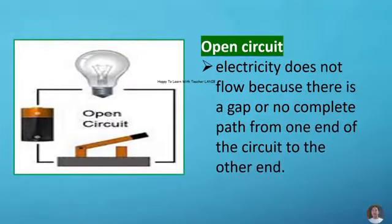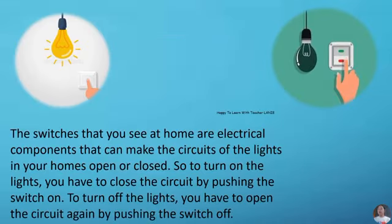While open circuit, electricity does not flow because there is a gap or no complete path from one end of the circuit to the other end. The switches that you see at home are electrical components that can make the circuits of the lights in your homes open or closed.